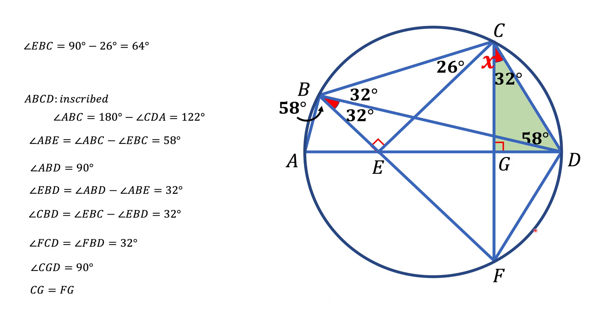So arc CD is congruent to arc DF. But it also means that the segments connecting the ends of those arcs are congruent. So chord CD is congruent to chord DF.